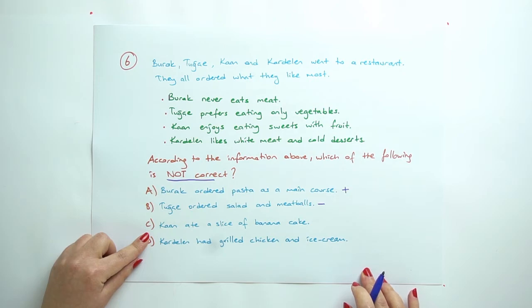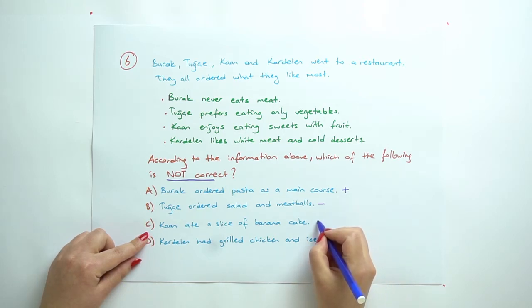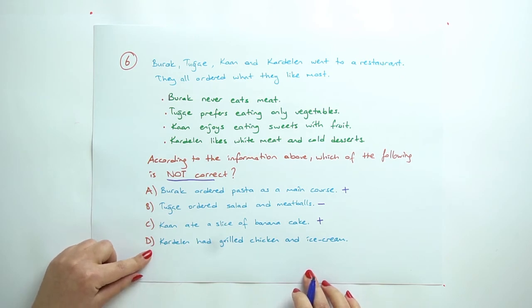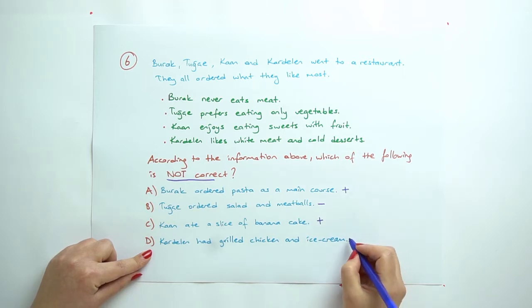So we cannot say this one. C: Kaan ate a slice of banana cake. Can you say this one? It is true, he likes sweets with fruit, so banana cake. And D: Kardelen had grilled chicken and ice cream. Yes, we can say this one too. So the answer is B here.